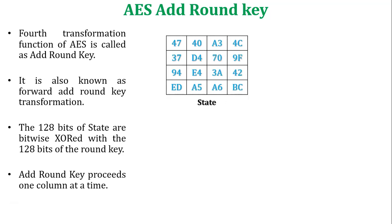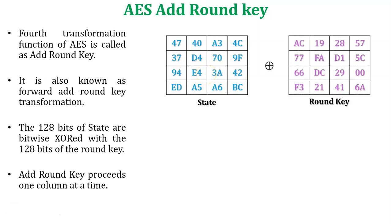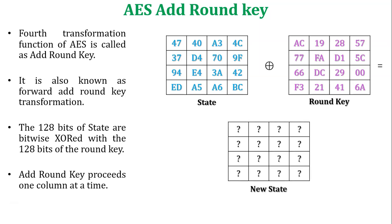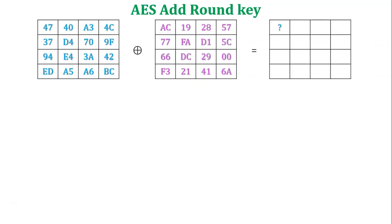Let's take one example to understand AES add round key. This is the state array, which is the output of the AES mix column step. This state array is XORed with the round key to generate a new state array. To obtain the first element of the new state array, perform XOR between the first element of the state array and the first element of the round key matrix.